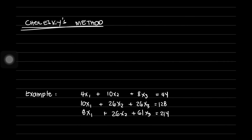Another method for solving a system of linear equations using LU decomposition is Cholesky's method. In using Cholesky's method, we are going to decompose the coefficient matrix. For example, given an expression where the coefficient matrix times X equals B, we decompose matrix A into the product of a lower triangular matrix multiplied by its transpose. But before we can use Cholesky's method, we need to determine if this method is applicable to the given equation.